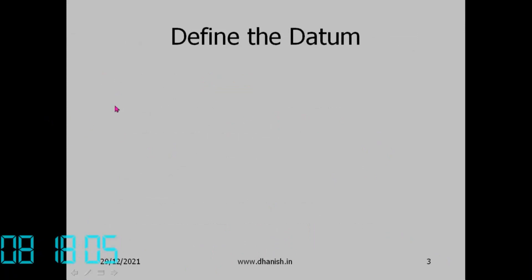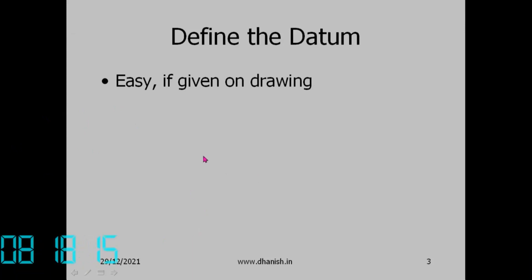Defining the datum: the datum is given on the drawing. If it is given on the drawing, you either locate the workpiece surface on the table or probe the datum points. If it is not given on the drawing, the operator has to decide which should be the datum — and different people choosing different datums will get different measurement results.